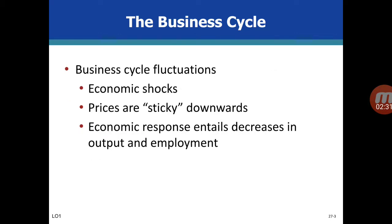Now the question is why do business cycle fluctuations occur? There are economic shocks — unexpected events in the economy. It could be natural calamities or man-made events like wars. All of these can contribute towards business cycle fluctuations. The more economic shocks there are, the more the economy fluctuates.